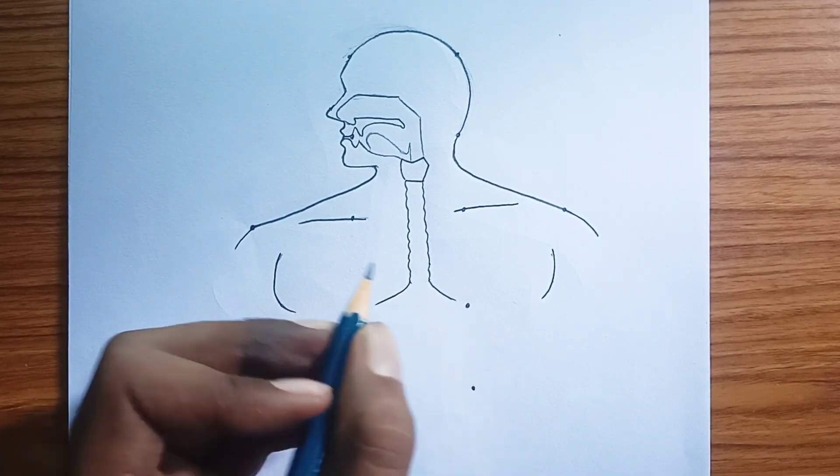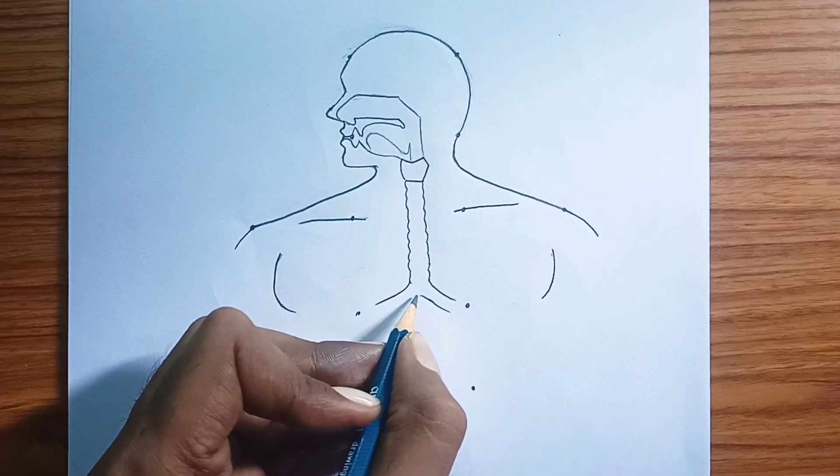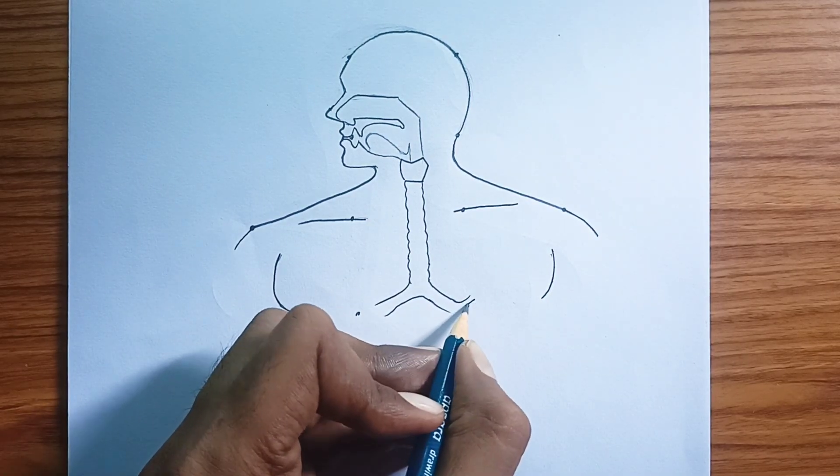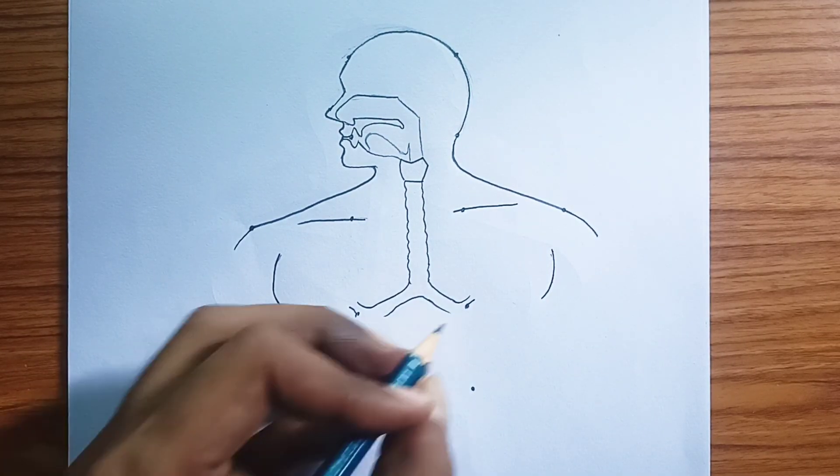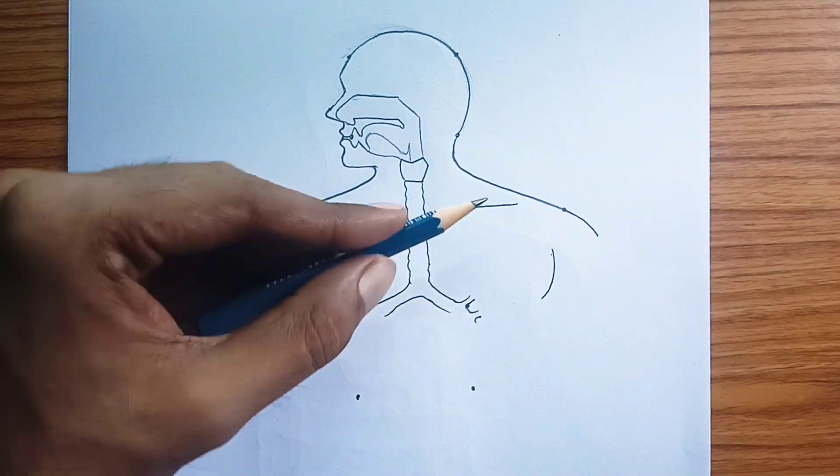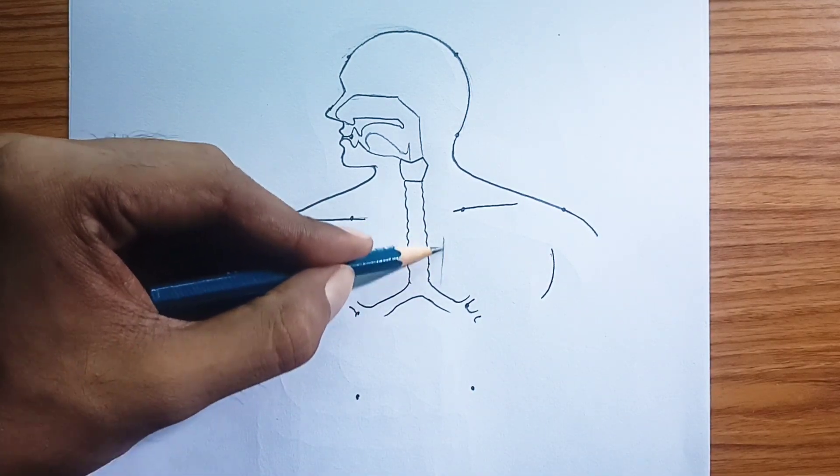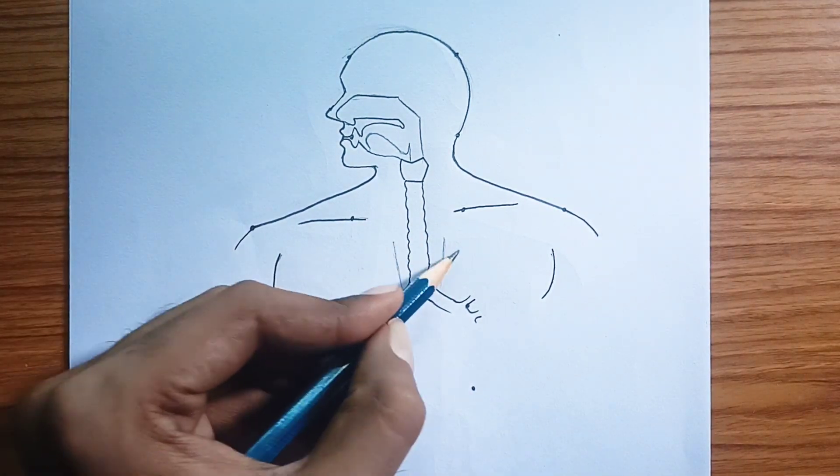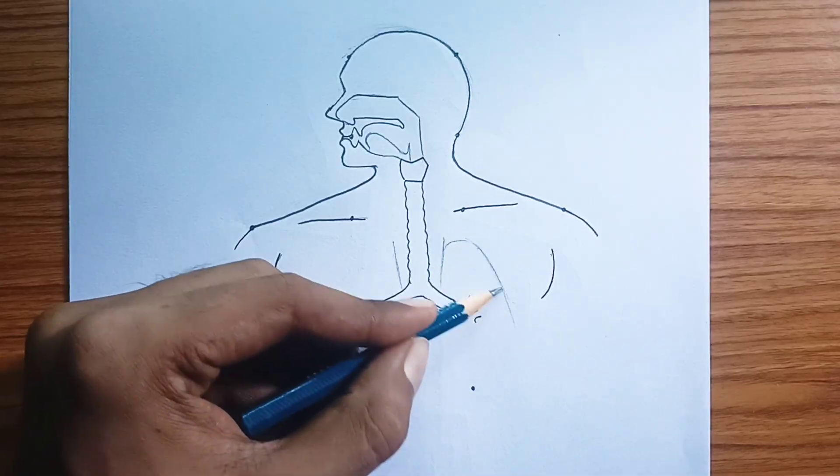Air typically enters through your nostrils, where tiny hairs and a sticky mucus lining trap dust and other particles. The air is also warmed and moistened here. You can also breathe through your mouth, especially during strenuous activity or when your nasal passages are blocked.